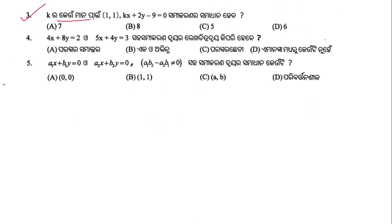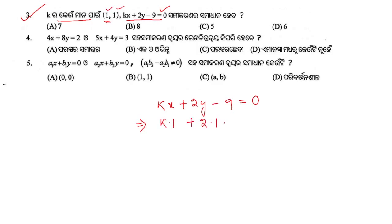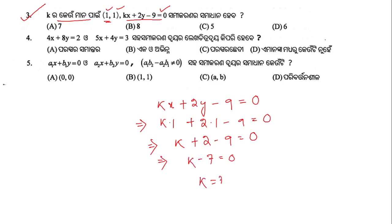Question number 3: For what value of k does the equation kx + 2y - 9 = 0 have the solution (1, 1)? We put x = 1 and y = 1 into the equation: k·1 + 2·1 - 9 = 0, which implies k + 2 - 9 = 0, which implies k - 7 = 0, so k = 7. Option A is the right answer.